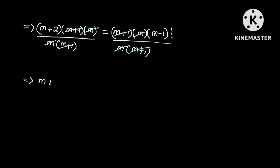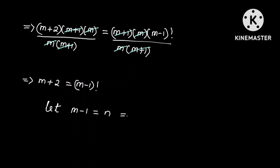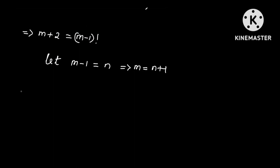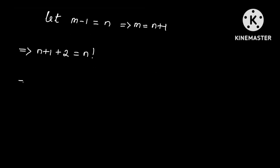This implies that M+2 = (M-1)!. For easier simplification, let M-1 = N, so M = N+1. The equation then becomes (N+1) + 2 = N!, which simplifies to M+3 = N!.